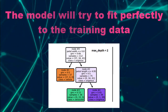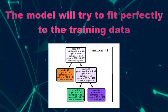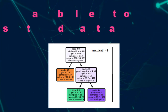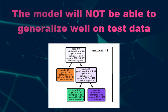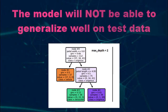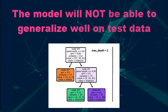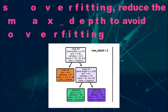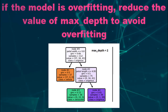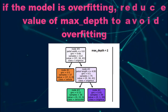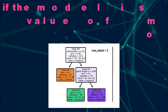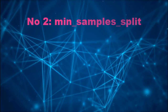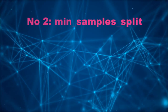The model will try to fit perfectly to the training data. Therefore, it will not be able to generalize well on test data. Thus, if the model is overfitting, reducing the value of max depth is a way to avoid overfitting.